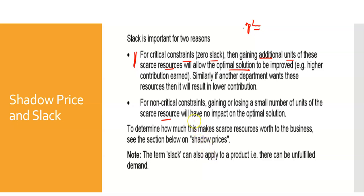But in terms of slack, there's nothing we can do with it - it's not going to help us because we have enough of it. So what we need to sort out are the scarce resources - see if we can get some more. So for non-critical constraints, this is where things are in slack. Actually, gaining or losing a small number will have no impact on the optimal solution.